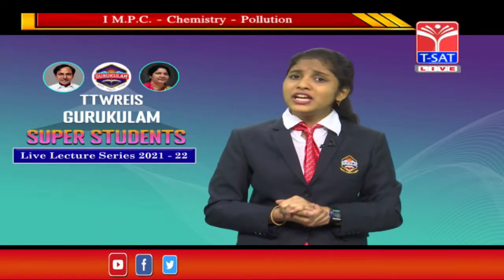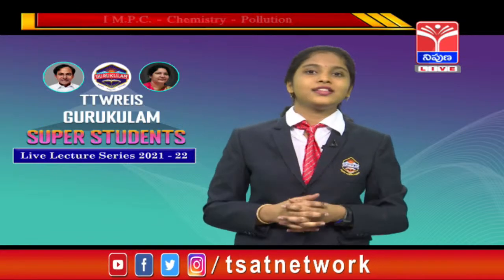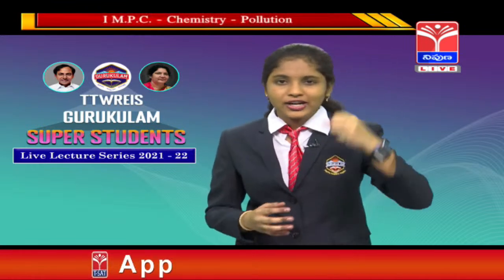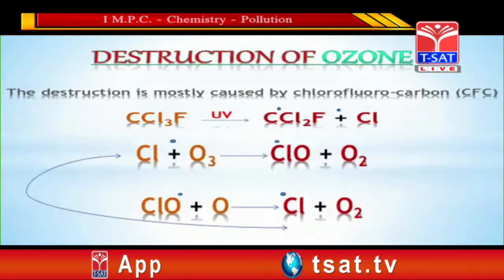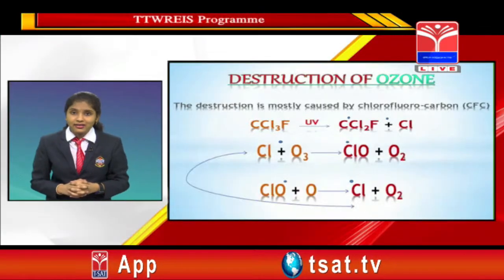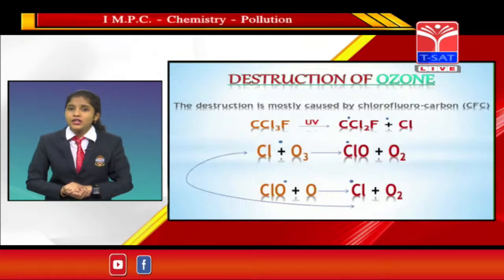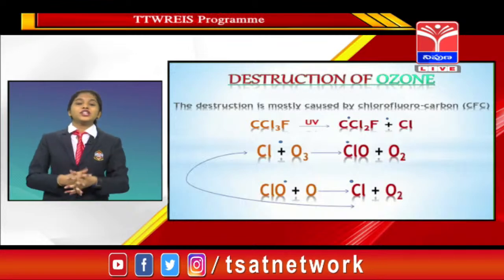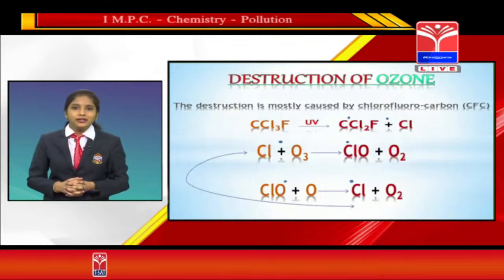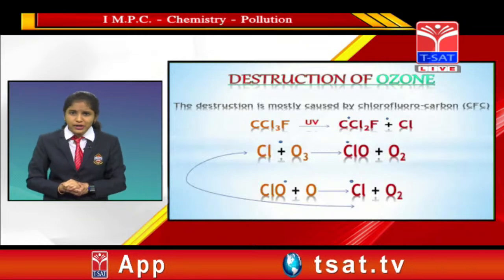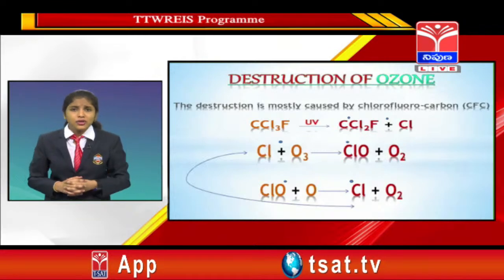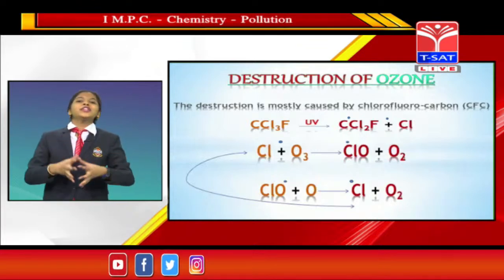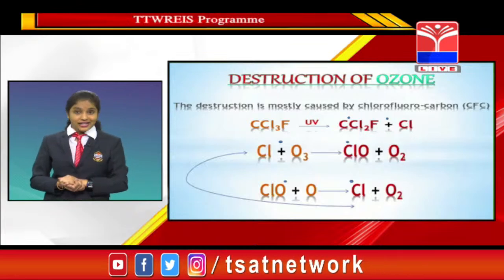How do chlorofluorocarbons lead to the depletion of the ozone layer? When CFCs reach the stratosphere and are hit by UV rays, they split into chlorine radicals. These chlorine radicals react with ozone to form chlorine monoxide radicals. On further oxidation, even more chlorine radicals are produced. This results in a dynamic equilibrium where CFCs constantly react with ozone, causing ozone depletion.